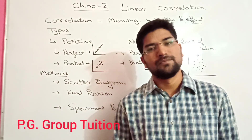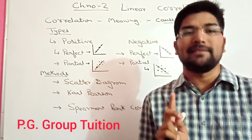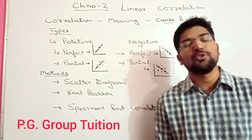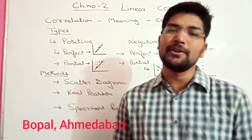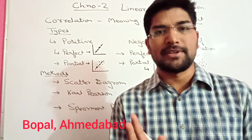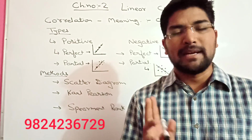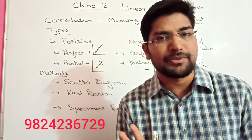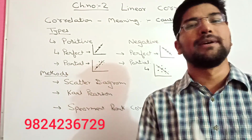In the same way for negative: perfect negative means whatever increase is in X, there is the same amount of decrease in Y — same proportion but in the opposite direction. That is said to be perfect negative. Partial negative means X and Y move in opposite directions, but not in the same proportion — the proportion is different. That is partial negative.